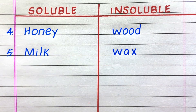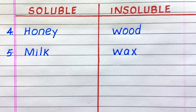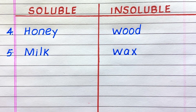The fourth material that is soluble in water is honey, fifth milk. The fourth material that is insoluble in water is wood, fifth wax.